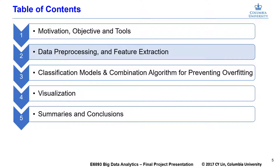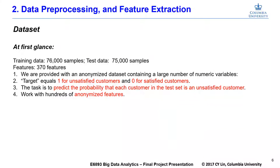The first part of the project is data preprocessing and feature extraction. Our training dataset contains 76,000 samples and test dataset contains 75,000 samples, and each sample contains 370 anonymized features. We provide target equals 1 for unsatisfied customers and 0 for satisfied customers.